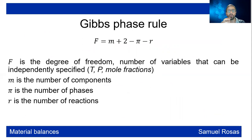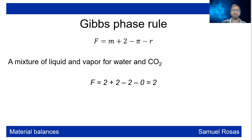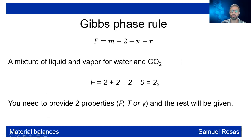The Gibbs phase rule states that the degrees of freedom — the number of variables you can independently specify, such as temperature, pressure, and mole fractions — equals the number of components plus 2, minus the number of phases, minus the number of reactions. For example, a mixture of liquid and vapor for water and CO₂: two components plus 2, minus 2 phases, minus 0 reactions, yields 2 degrees of freedom. This means you need to provide two properties — pressure, temperature, or a mole fraction — and the rest will be determined.